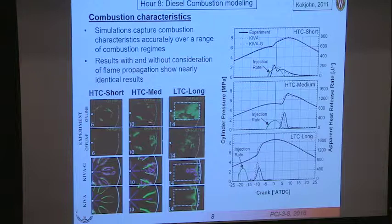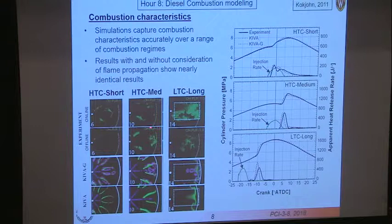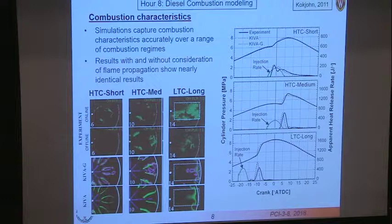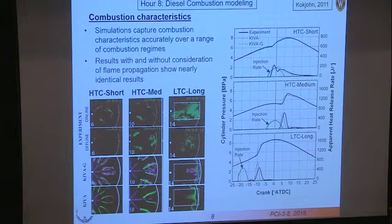Here you see some of the experimental OH-PLIF results. Care was taken to make sure you're actually looking at OH in those experiments. The square region indicates where measurements were confidently made. The piston bore diameter is shown, and the injector is located at the outer diameter — so you're spraying from left to right in each image. Here are the two simulation cases shown at the same times as in the experiment, and I'll go through those in more detail.